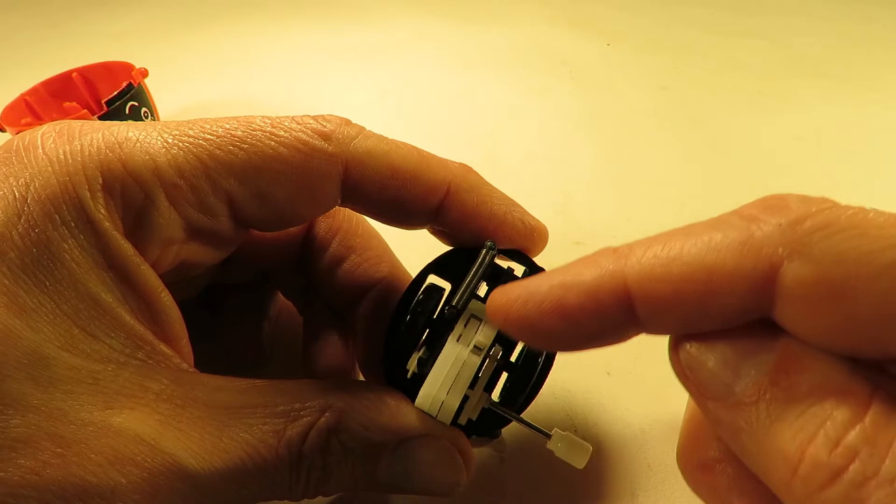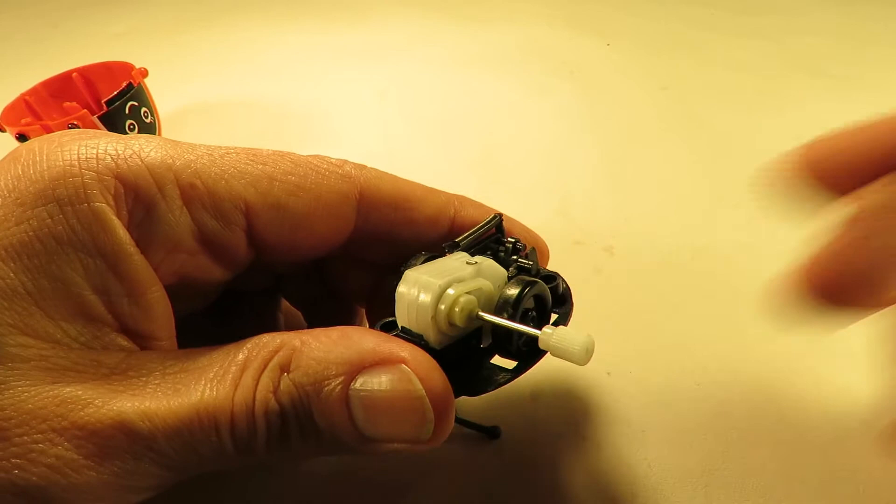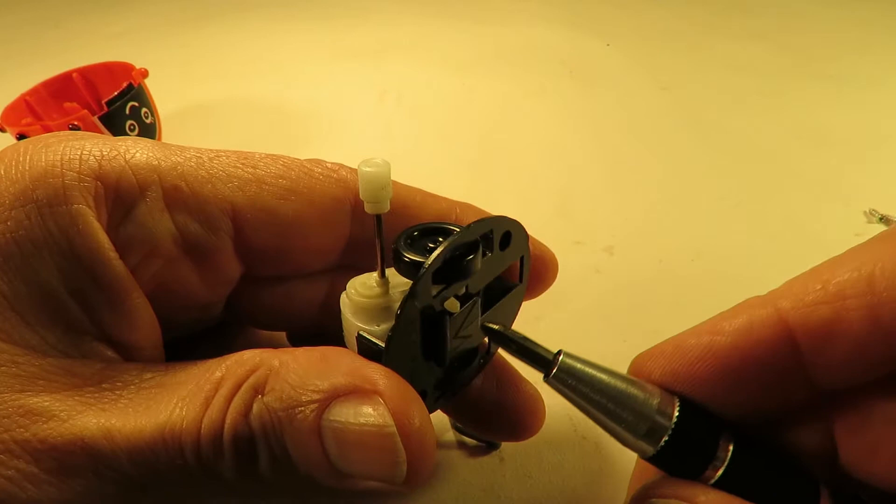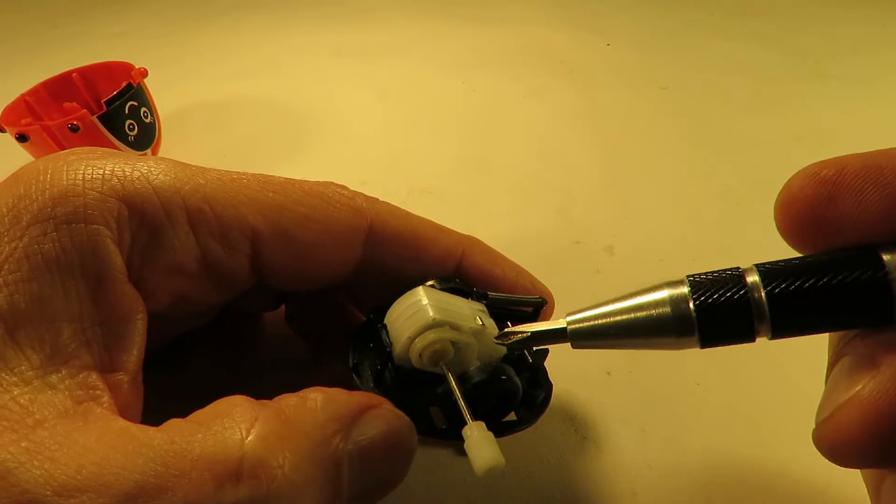So we've got a fairly standard little wind-up motor there, spring powered. I'm not going to take that apart. All I'm interested in is what it is that makes that white lever move and the big black lever.